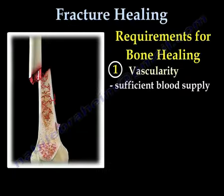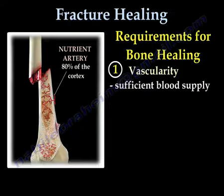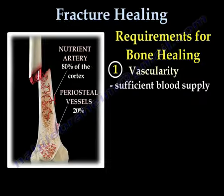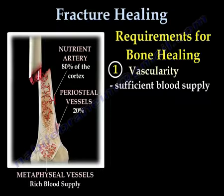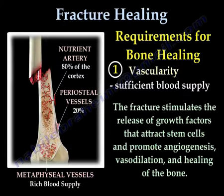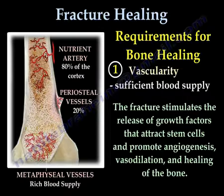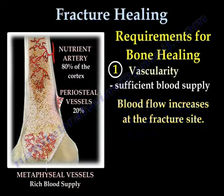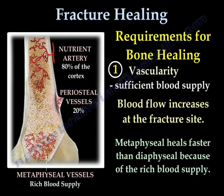The nutrient artery supplies 80% of the cortex, while the periosteal vessels supply the outer 20% of the cortex. The metaphyseal vessels have a very rich blood supply, which is why the metaphysis heals faster. The fracture stimulates the release of growth factors that attract stem cells, which promote angiogenesis, vasodilation, and healing of the bone. Blood flow increases at the fracture site, and the metaphysis heals faster than the diaphysis because of its rich blood supply.